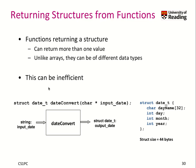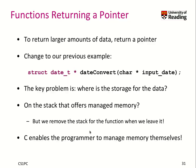How do we actually return a structure from a function? We have a function called dateConvert that takes an input date as a string and returns our structure. You input a string, run this function, and get our structure as the output date. If our structure looks like this, we have to put everything on the stack — which is 44 bytes — and it needs to be copied when the function is exited as well.